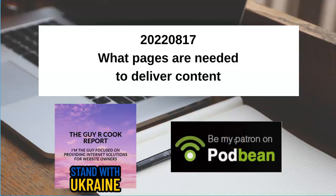I want to talk about the pages that your website's going to need to deliver content. There's a list I got from digital.com, and they list 13 different pages that your website should have — of course, there's a homepage, and then there's the About page, etc. If you go to the show notes, guyrcookreport.podbean.com and find this episode about what pages are needed to deliver your content, then you've done the job and you've got the list. It's all in there.